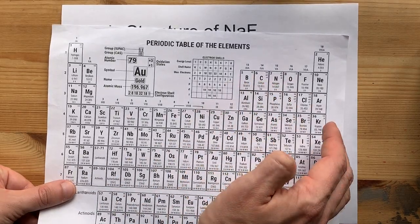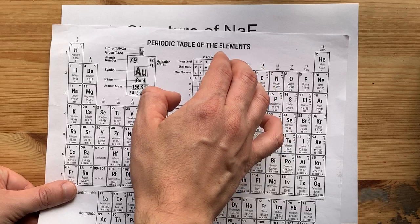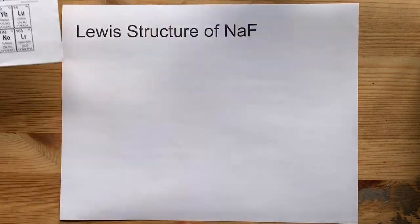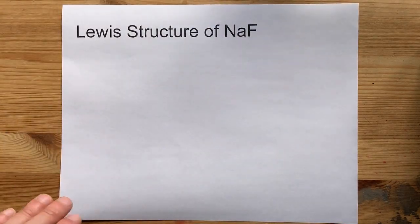Fluorine is a non-metal. It comes from the right-hand side of the staircase. That group's called the halogens, but that's neither here nor there.